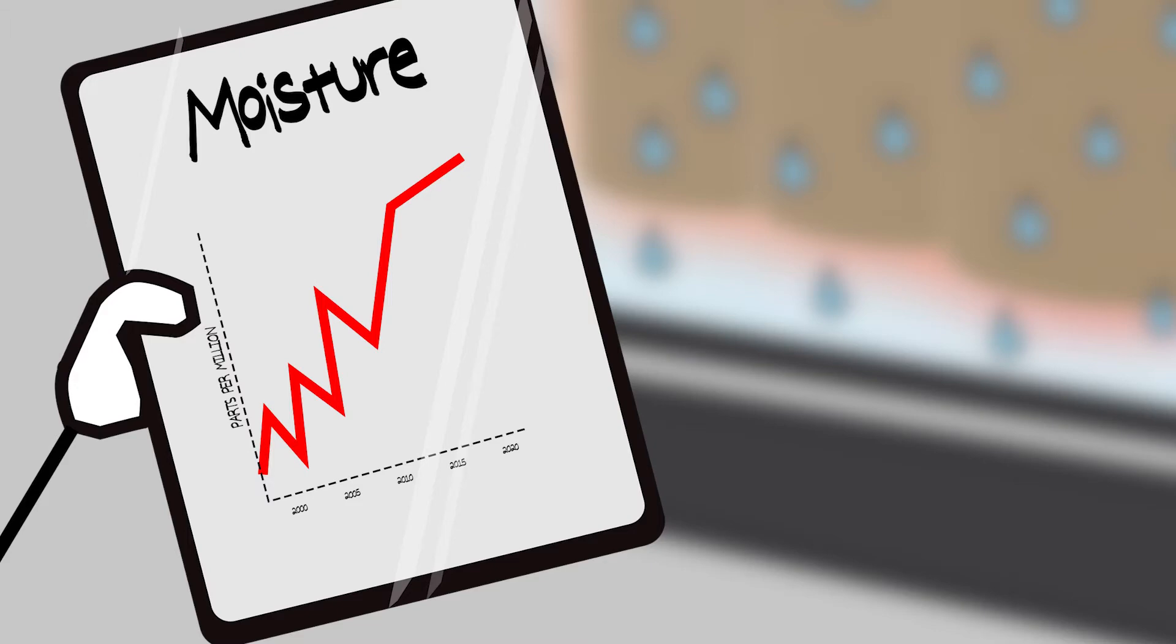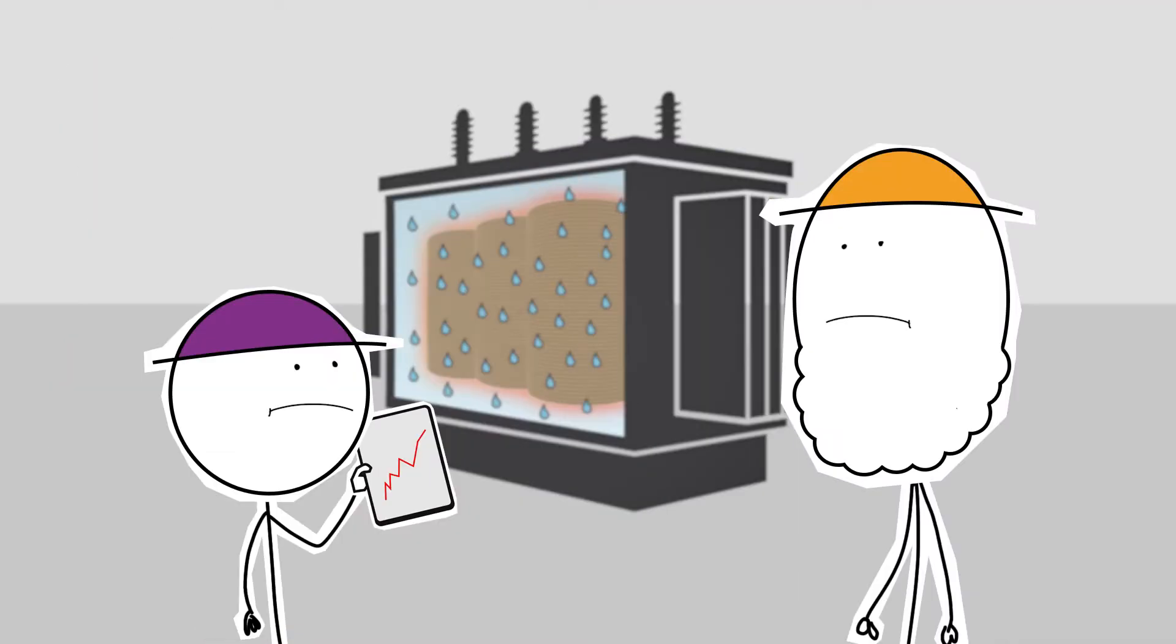That ain't good. Moisture leads to oxidation, and that means losing the dielectric strength of the insulation. When that paper insulation is shot, well, that's all she wrote.